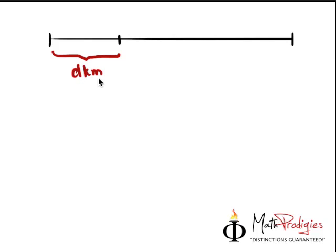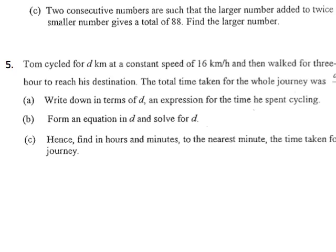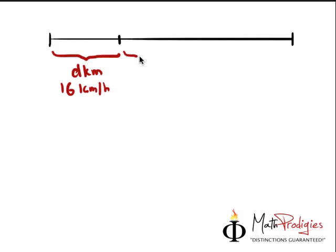Tom cycled from here all the way to here. And he traveled for the first D kilometers. I don't know where it is so I'm just going to put D here. So I'm going to draw for you D, for the first D kilometers. And he traveled for how long? Let's take a look. He traveled at a speed of 16 kilometers per hour. So 16 kilometers per hour is his speed. Next, it says that he walked for three-quarter of an hour to reach his destination. Three-quarter of an hour is here.